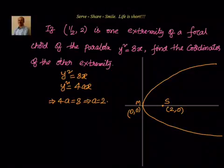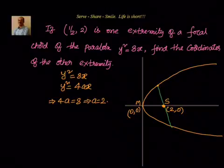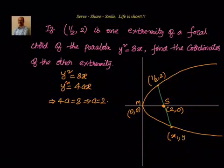We have been given that (1/2, 2) is an extremity of a focal chord. A focal chord means a line segment joining two points on the parabola and passing through the focus. Chord means a line segment joining two points on the parabola; if it also passes through the focus, we call it a focal chord. So (1/2, 2) is one extremity and we have to find the other extremity — let us say that is (x1, y1).